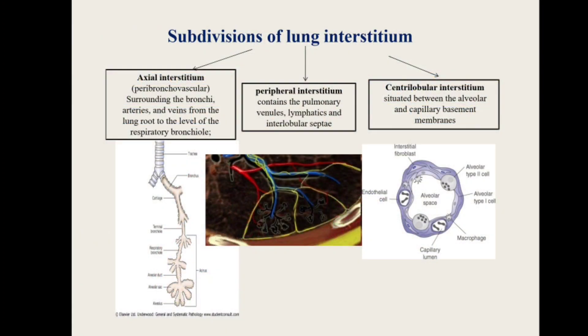There are three types of interstitium. First is the axial interstitium, which surrounds the bronchi, artery, and venules — mainly at the lung root. The peripheral interstitium is shown in the diagram of the secondary pulmonary lobule; the yellow-colored region is the peripheral interstitium, present along the lobule. The central lobar interstitium is between the alveolus and the vessel.